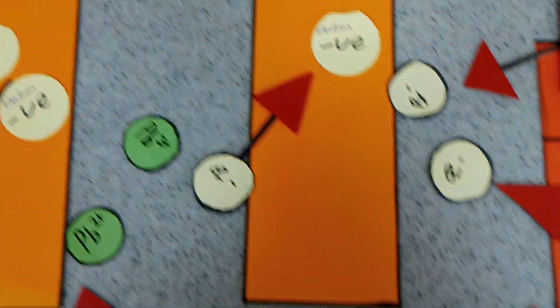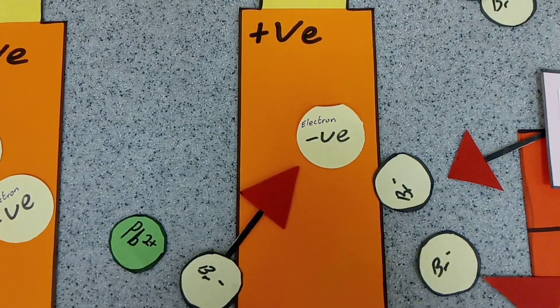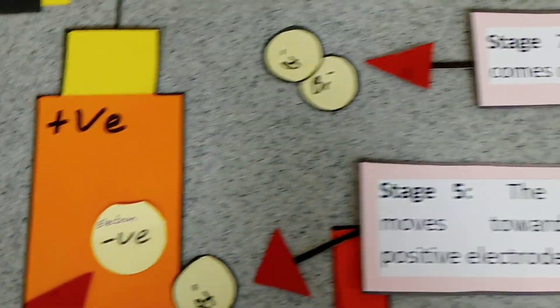At the positive electrode, the bromines lose one electron each and bubble off as bromine gas.